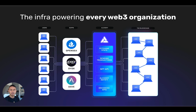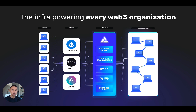Let's see how this works. When a user opens OpenSea or DYDX, these organizations don't talk to the blockchain directly. They send their requests via JSON RPC to Alchemy, which sends the requests to the rest of the blockchain. Once a response comes back, Alchemy returns the responses to OpenSea or DYDX.